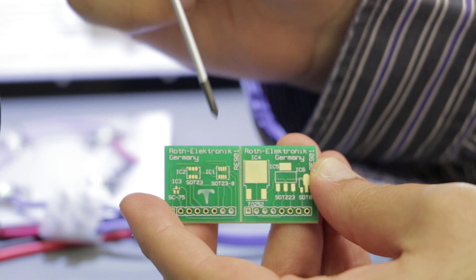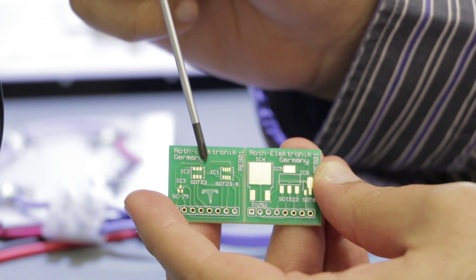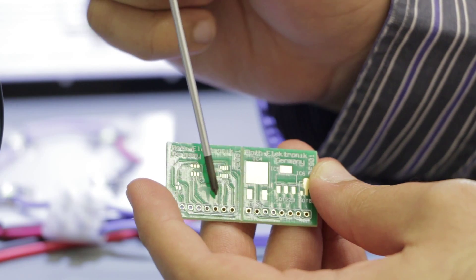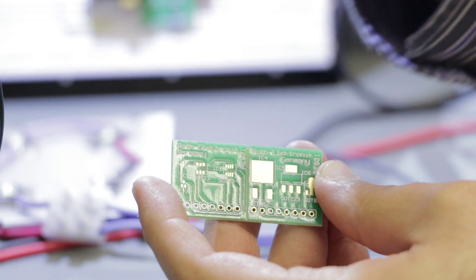What this allows you to do is to attach your surface mount component here and then it breaks it out to all these pins at the bottom. This allows you to use it on the breadboard.